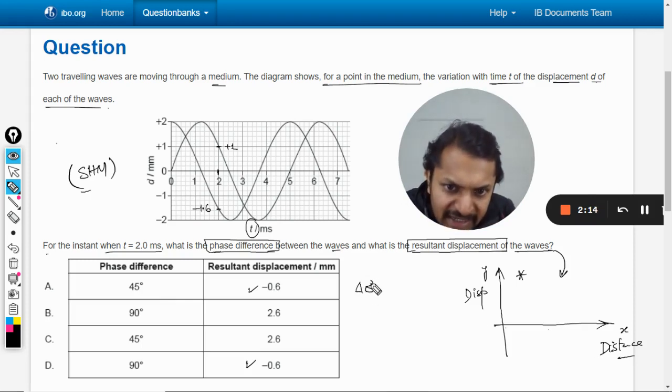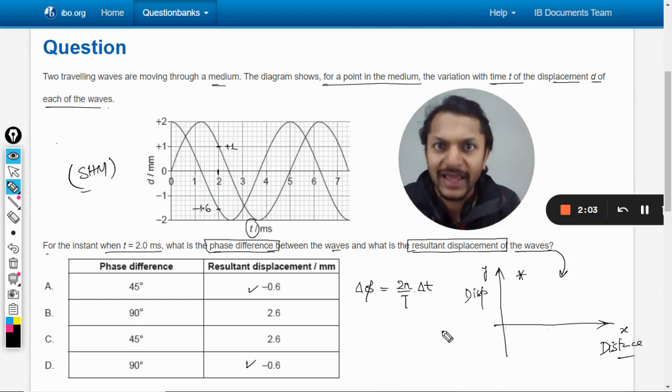This is given in our books and IB also, but many times it is overlooked by students. So what is happening: delta phi, the phase difference, would be given by 2 pi divided by T into delta t.